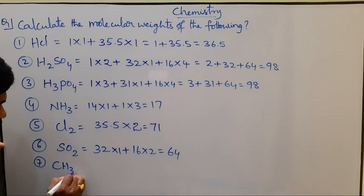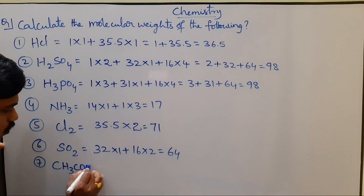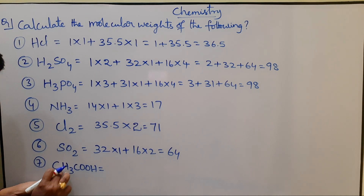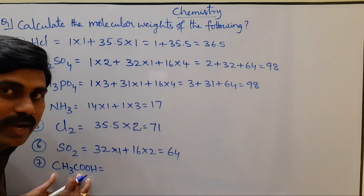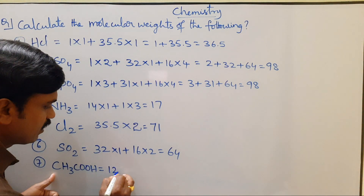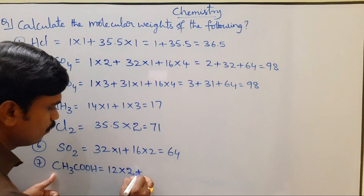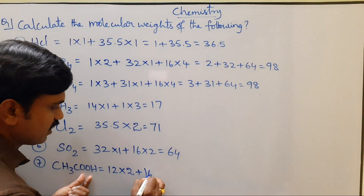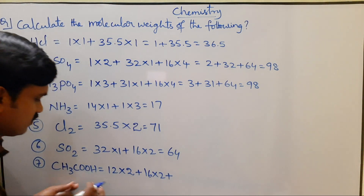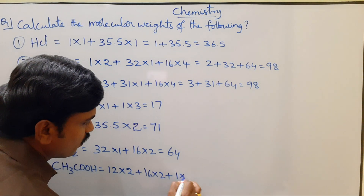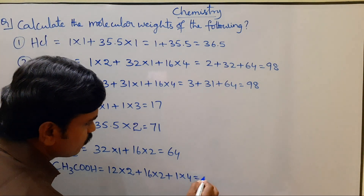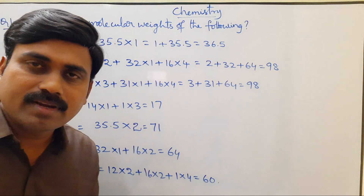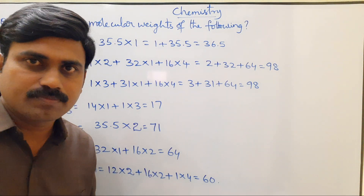The seventh compound is Acetic acid, chemical formula CH3COOH. In acetic acid there is one carbon here and one carbon here, giving a total of two carbon atoms. Carbon atomic weight 12 × 2, plus two oxygen atoms 16 × 2, plus four hydrogen atoms 1 × 4. The total value comes to 60. Between element terms, the plus symbol should be used.